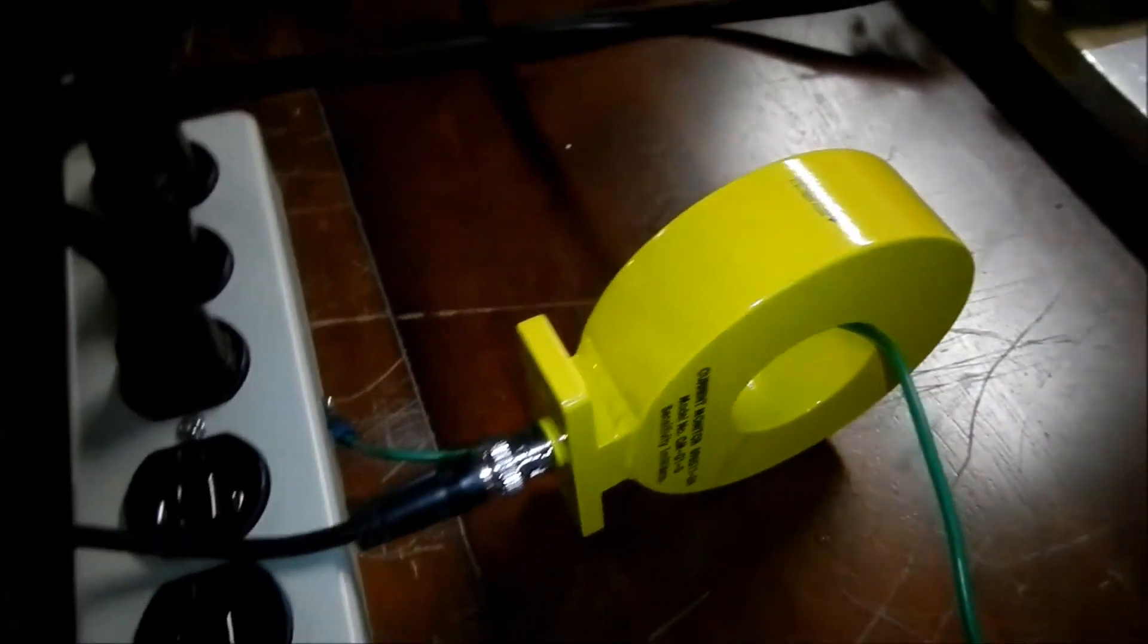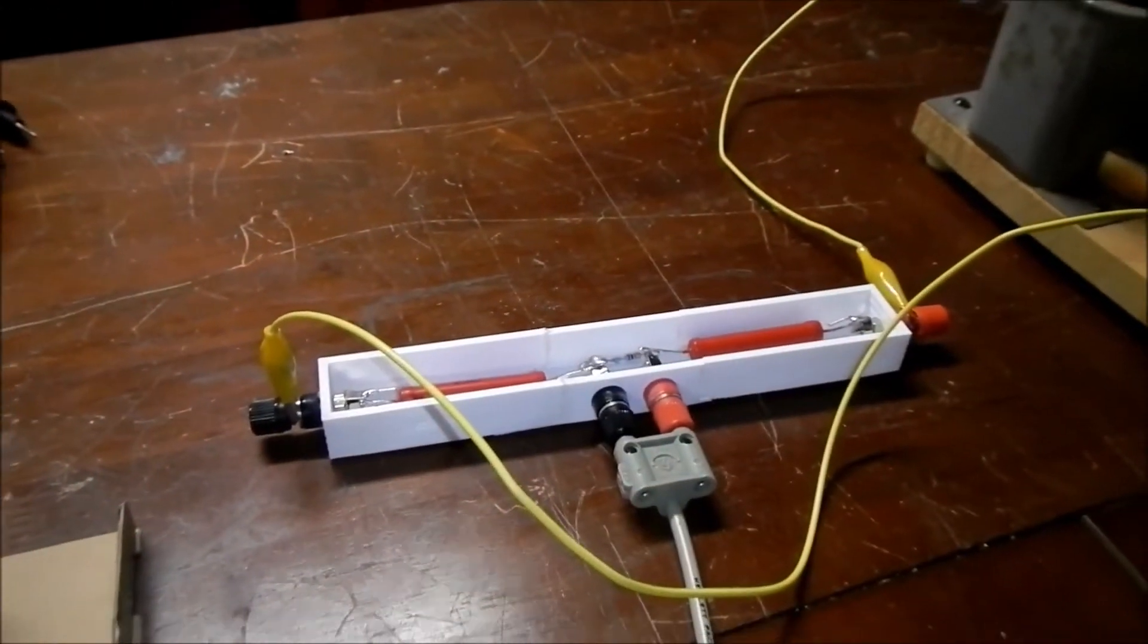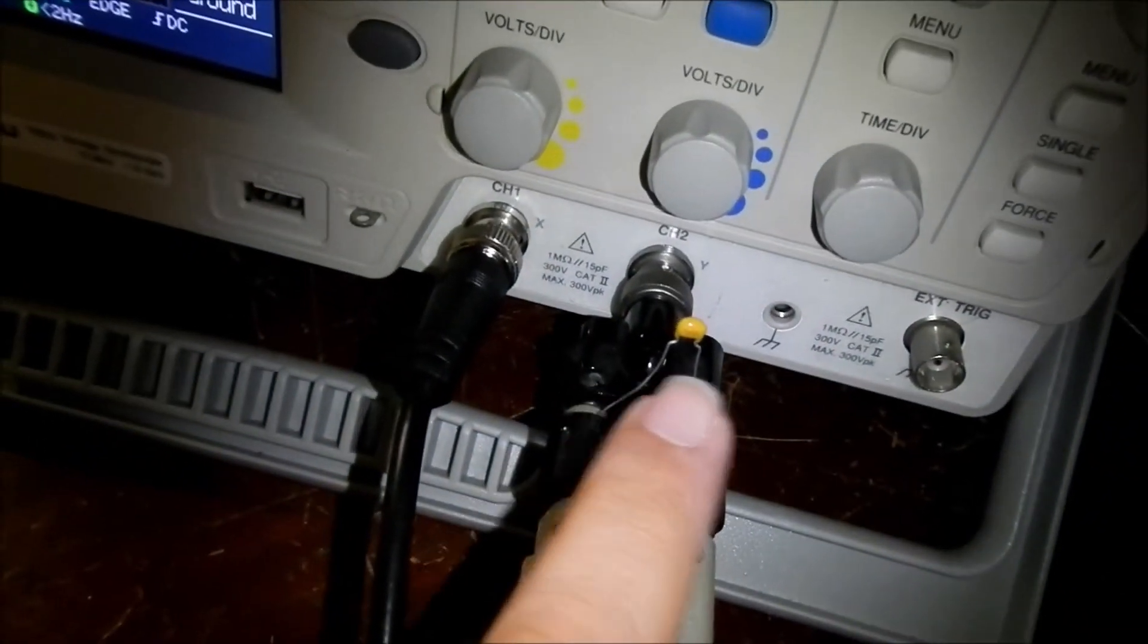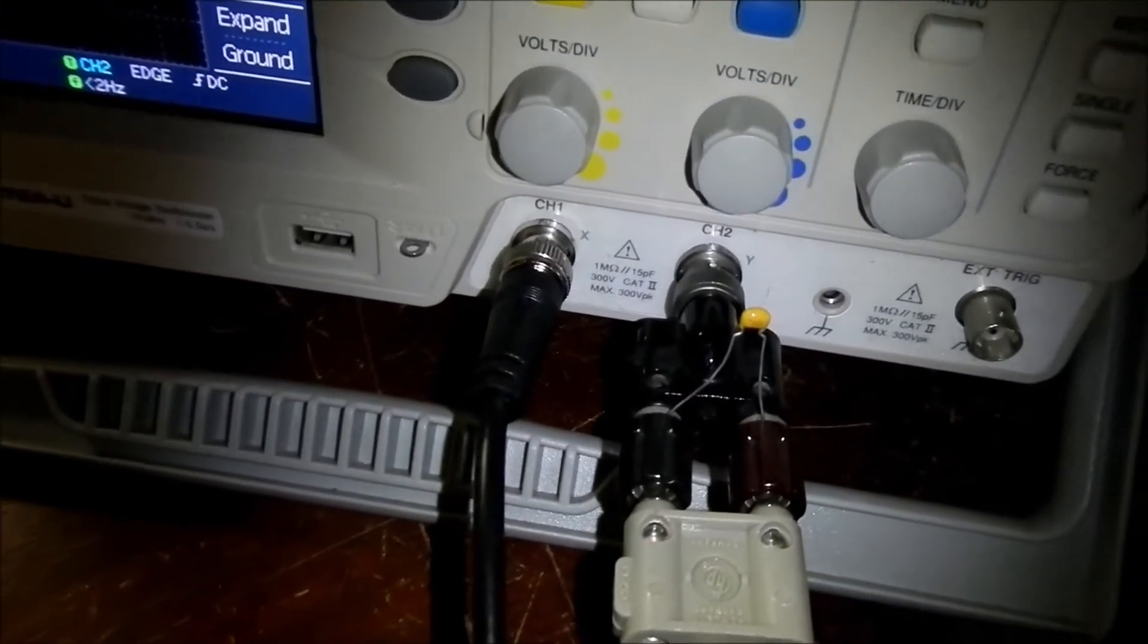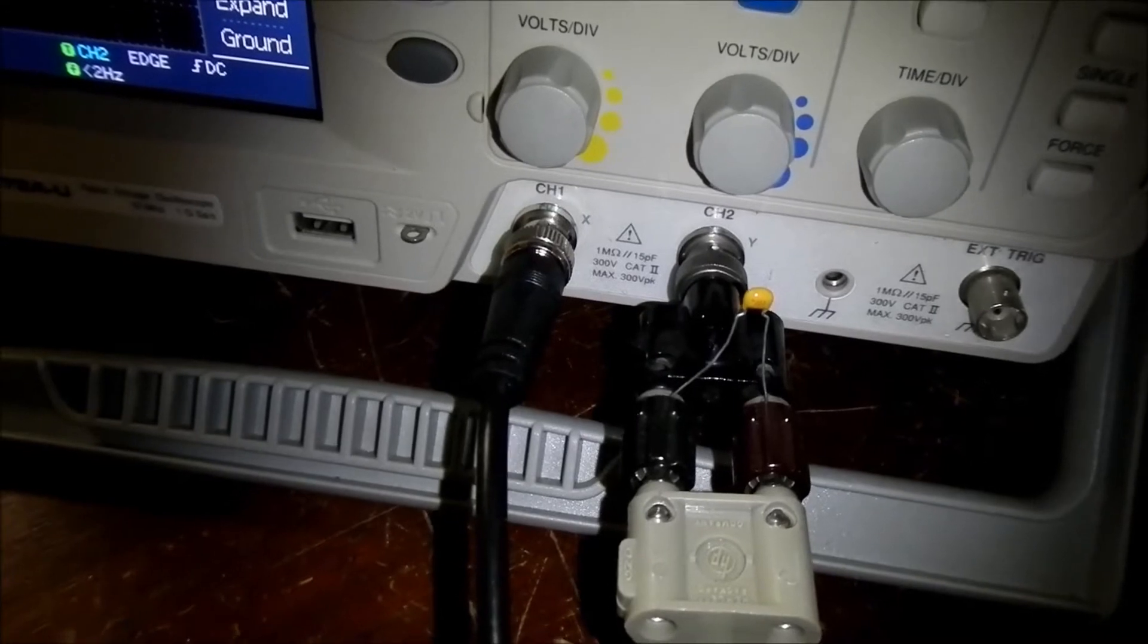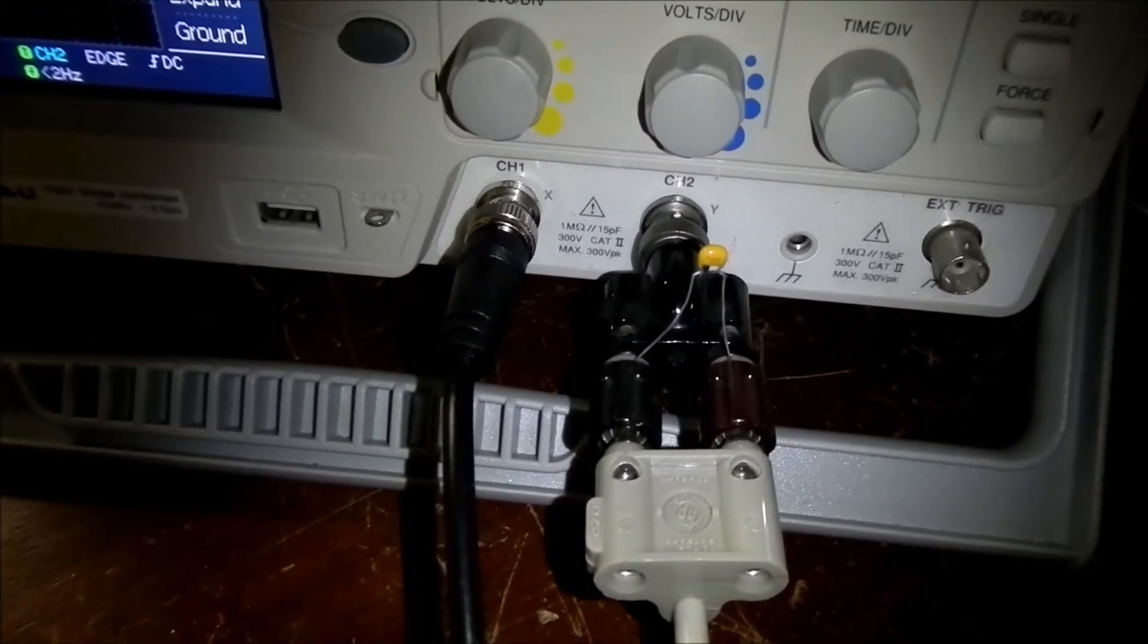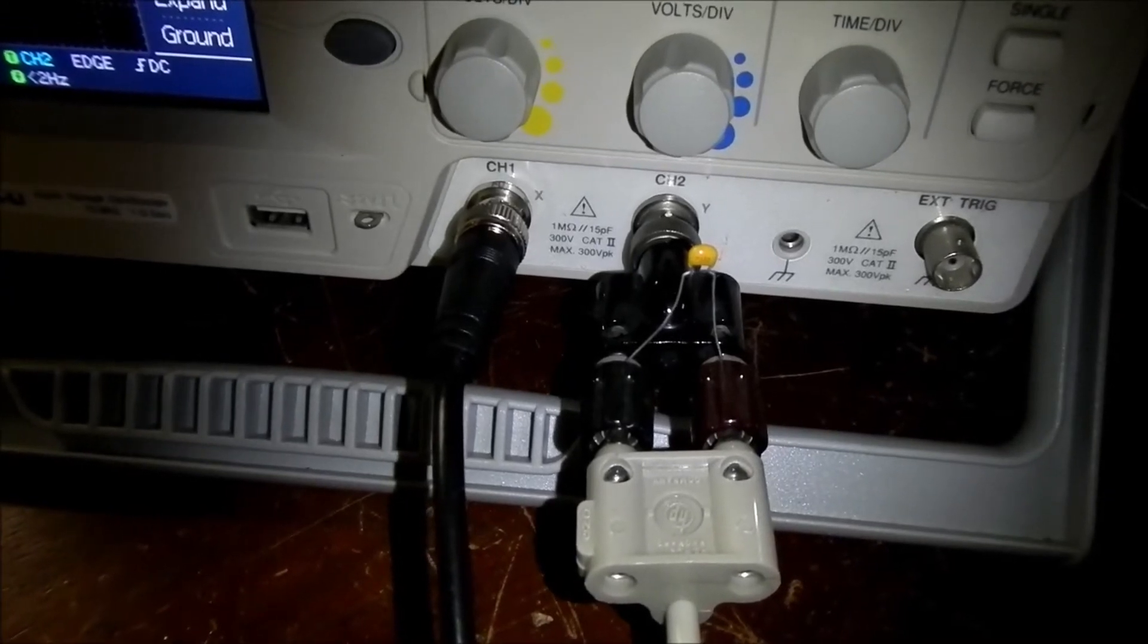The current transformer I'm using goes to one channel of my oscilloscope. This is my high voltage probe and it's going to the other channel of my oscilloscope. I have here a little capacitor to filter out some of the RF noise so you can see the 60 hertz sine wave signal more clearly.